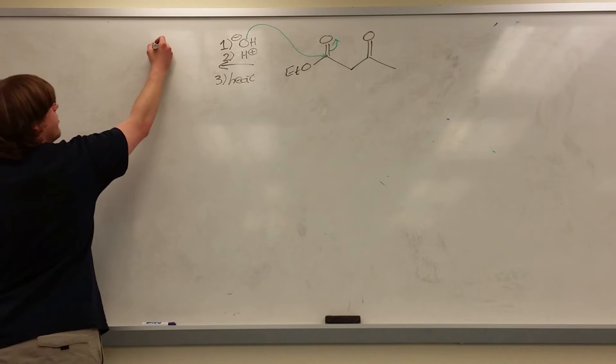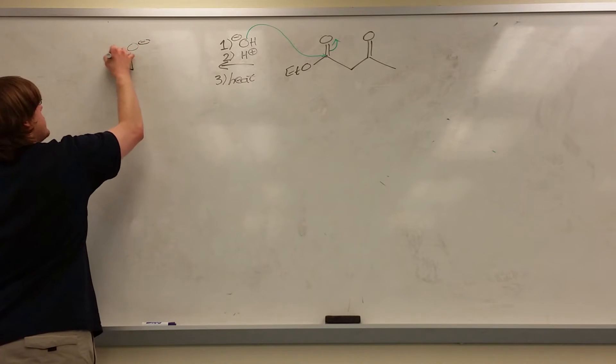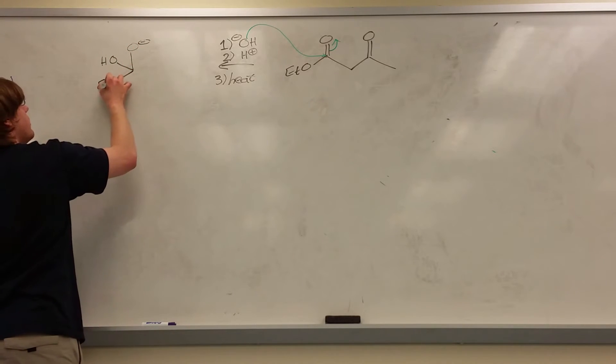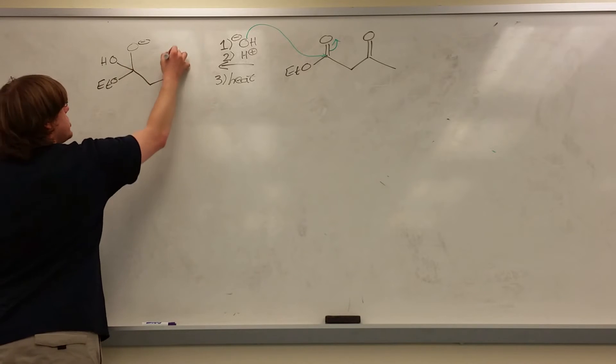And so now you have an O minus. You have the OH that attached. You have the OET that was there. And then you have the rest of the chain.